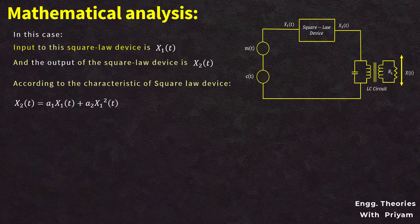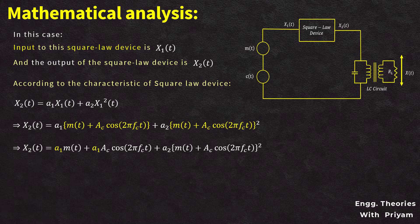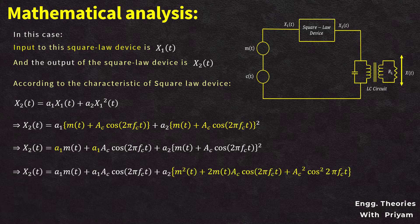Substituting x1(t) = m(t) + AC·cos(2πfc·t) into equation two, x2(t) can be written as: a1·m(t) + a1·AC·cos(2πfc·t) + a2·[m(t) + AC·cos(2πfc·t)]². Applying the (a+b)² formula to the squared term, this expands to: a1·m(t) + a1·AC·cos(2πfc·t) + a2·[m²(t) + 2·m(t)·AC·cos(2πfc·t) + AC²·cos²(2πfc·t)].